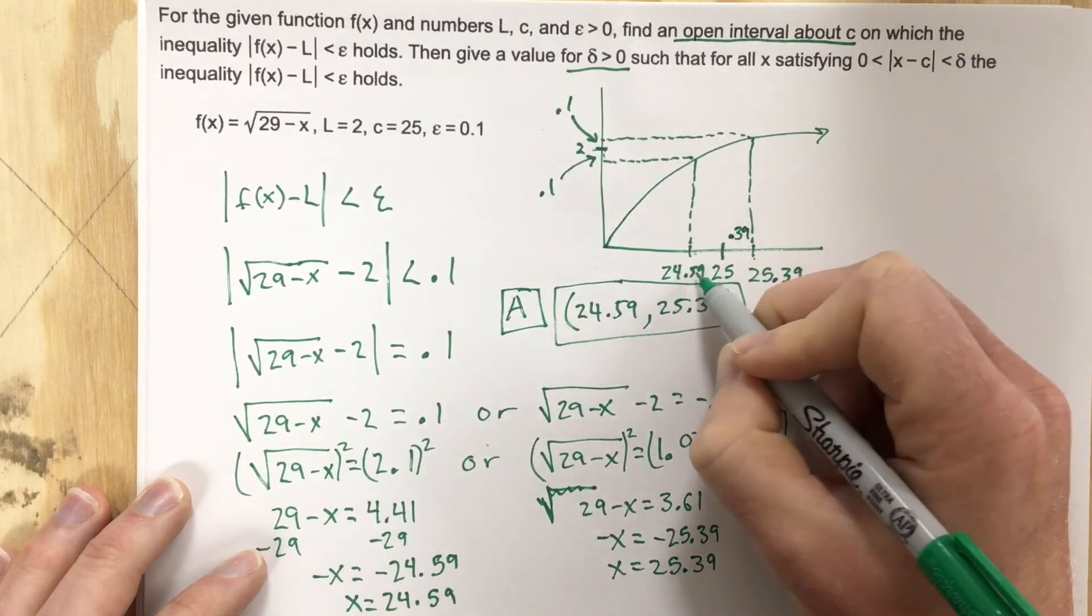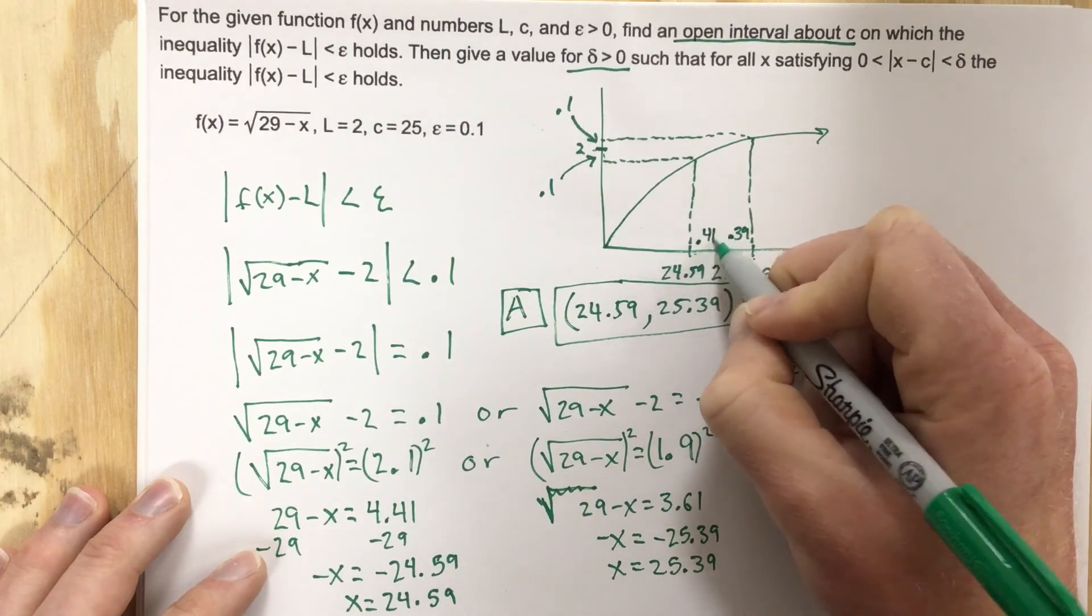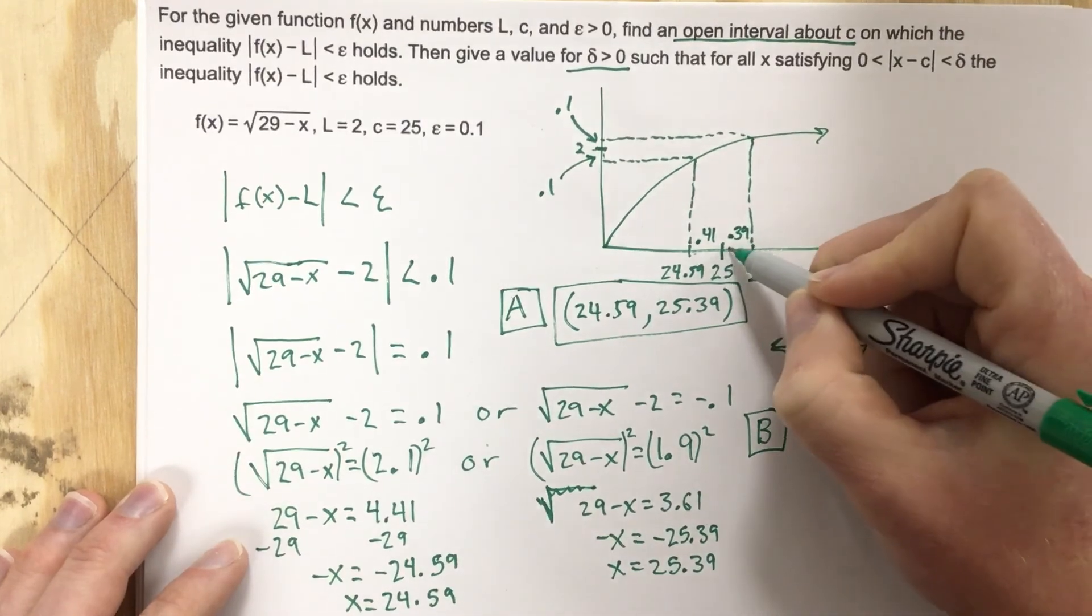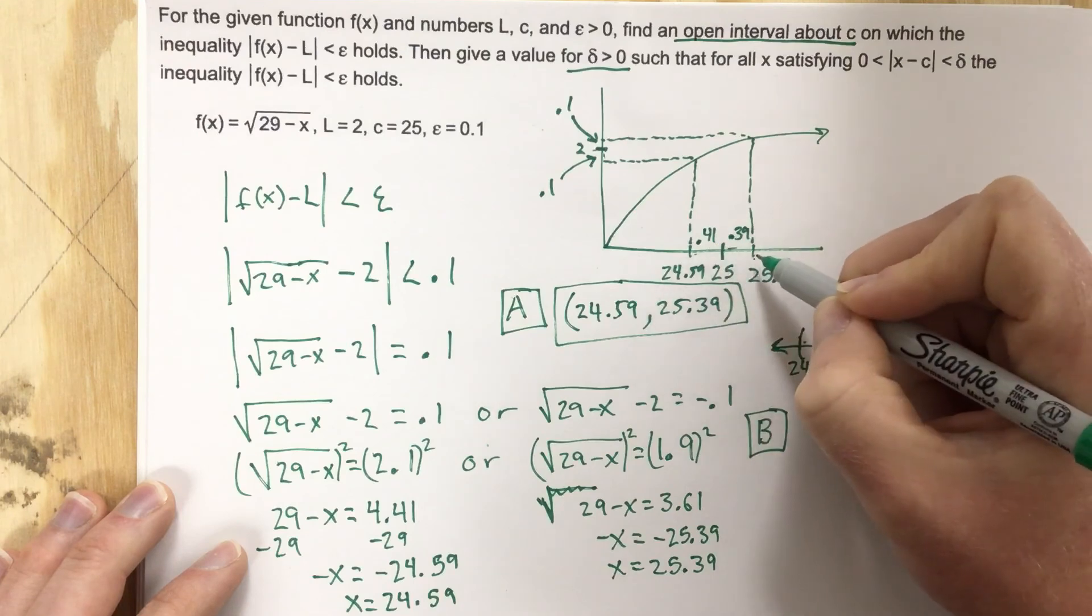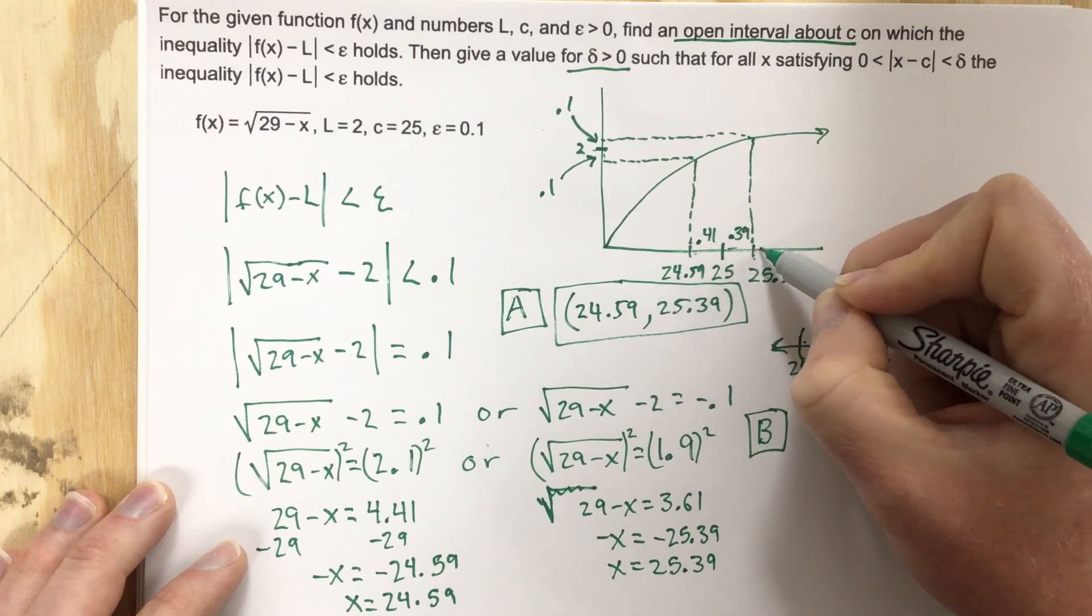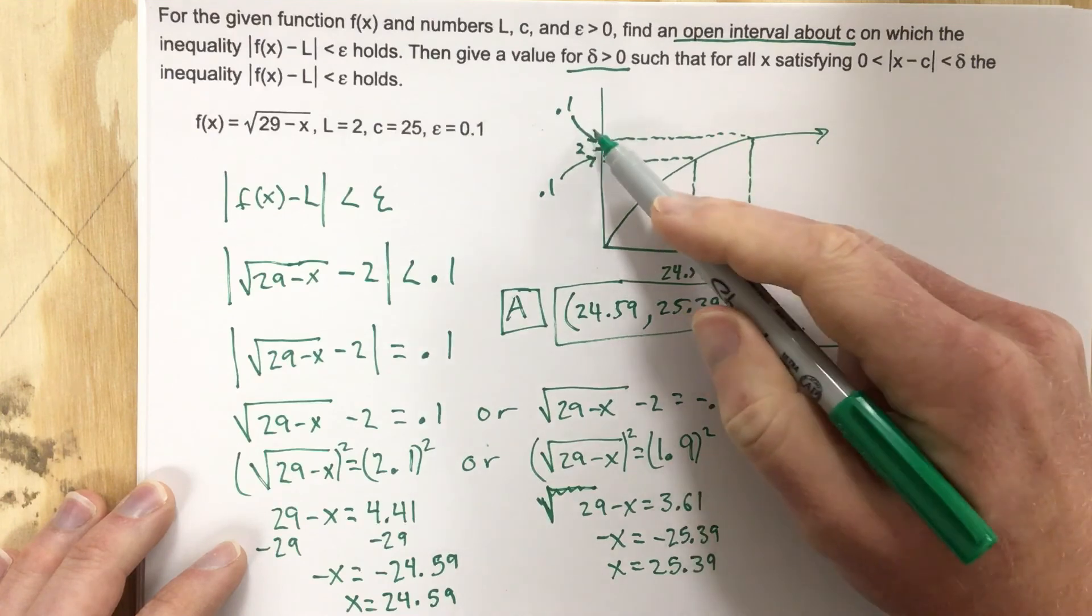What's the gap right here? Well, this is 25 - 24.59, which is 0.41. So this gap here is smaller than this gap, meaning if we use the 0.41 gap on this side,